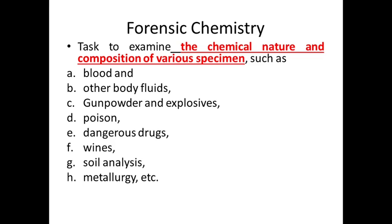What are the tasks of forensic chemists? Forensic chemistry is tasked to examine the chemical nature and composition of various specimens — dealing with qualitative examination. Specifically, forensic chemistry deals with blood, commonly found at crime scenes, where the forensic chemist examines whether the blood belongs to animals or humans. It also deals with other bodily fluids such as urine and semen — for instance, determining whether fluid extracted from a victim is semen or not.